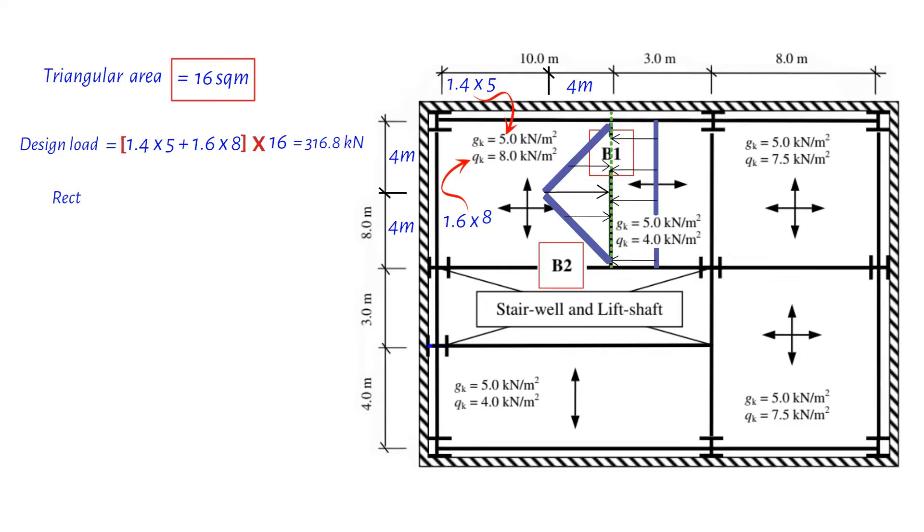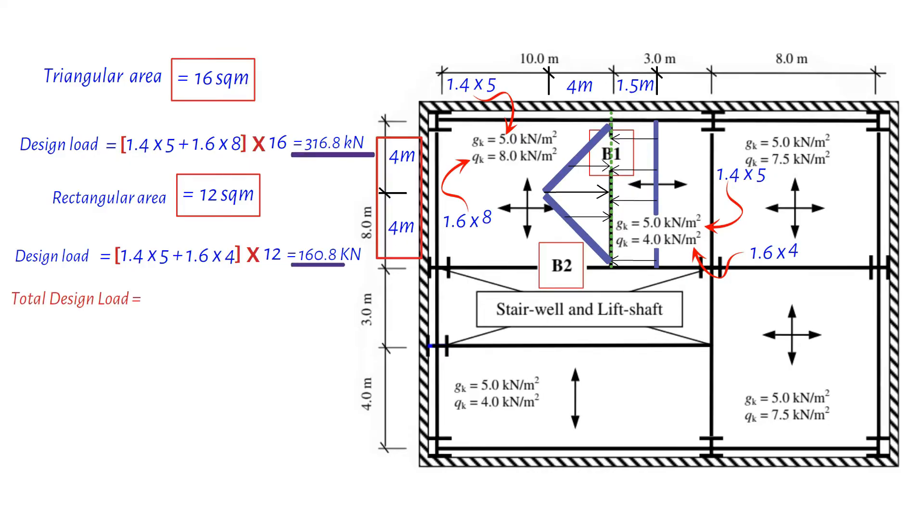Now, for the rectangular load, we have an area that's 1.5 meters by 8 meters, which equals 12 square meters. We do the same kind of math as we did for the triangular part and find out it can take 160.8 kilonewton of weight. Add those two numbers together, the triangle and the rectangle, and the grand total tells us beam B1 can hold up 477.6 kilonewton. Pretty strong, right?